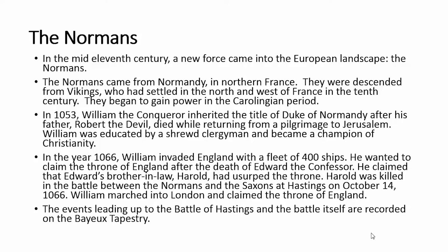In 1053, William the Conqueror received the title Duke of Normandy after his father Robert the Devil died in Jerusalem. William was educated by a clergyman who knew the maxim that church and state together are more powerful than each alone. In 1066, William, now a champion of Christianity, invaded England with 400 ships, wanting to claim the throne after Edward the Confessor died. He claimed Harold had usurped the throne. This is the Battle of Hastings — a very complicated history worth looking up.